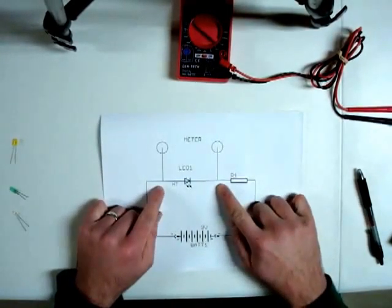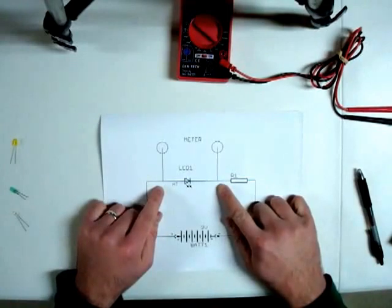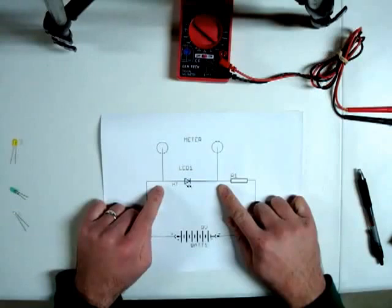Across the LED at these points we're going to connect a very cheap multimeter on a voltage setting and this is going to measure the drop in voltage across this LED.